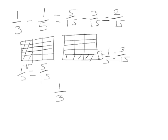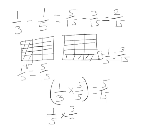We learned with our addition that one way to get a common unit is to take one of our fractions and multiply it by the denominator of the other fraction. So 1 third times 5 fifths equals 5 fifteenths — notice that matches what we did with our rectangular fraction model. 1 fifth times 3 thirds equals 3 fifteenths, and that matches what we got in our rectangular model.